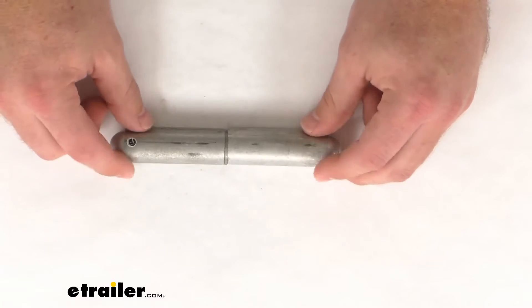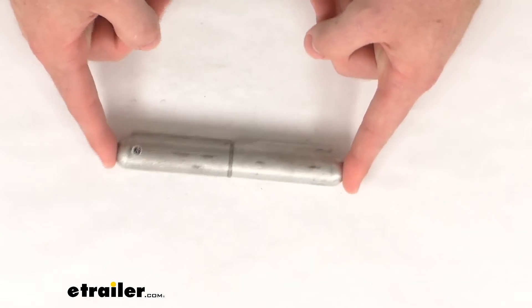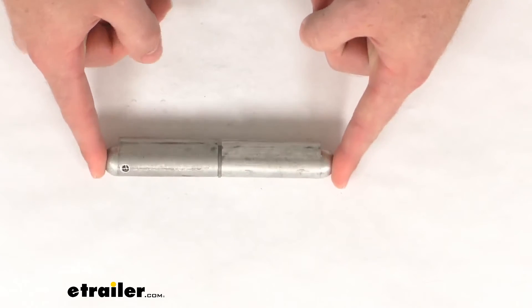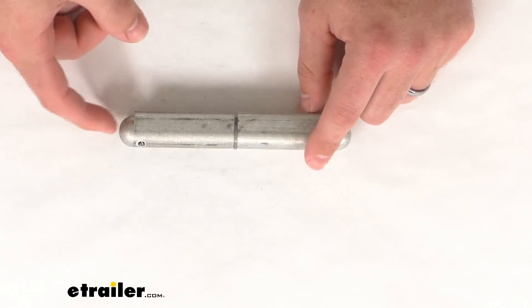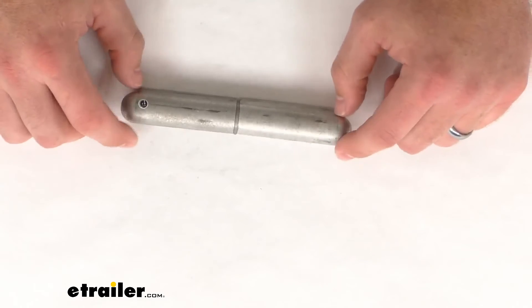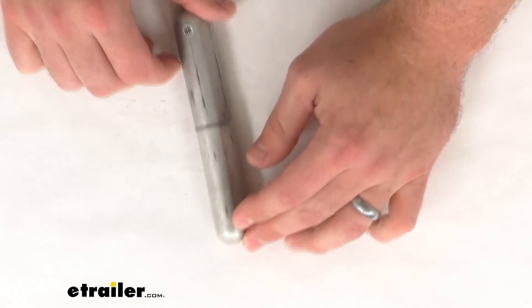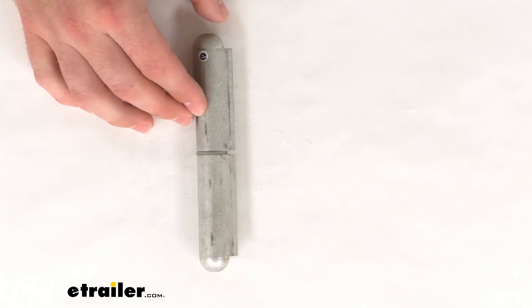So if you are looking for a weld-on aluminum hinge that is just shy of six inches long, this is going to be a great option. We also have one that's got a built-in grease zerk on it, so it makes it a little bit easier to keep everything lubricated. So depending on your needs, we do have lots of options available for you here at eTrailer.com.